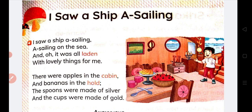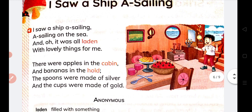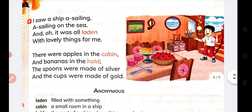Let us see what is given in the poem. 'I saw a ship a sailing, a sailing on the sea.' I saw a ship and it was sailing, it was sailing in the sea.